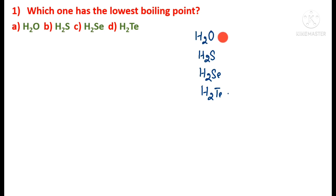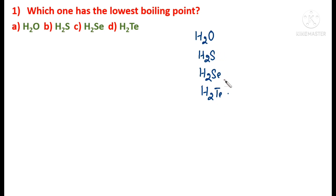Among these four hydrides, water (H₂O) is considered to have the highest boiling point because water molecules are linked by means of strong intermolecular hydrogen bonding, requiring a large amount of energy to break. So water is not the answer. Hydrogen bonding is not present in the rest of the hydrides due to the low electronegativities of their central atoms — sulfur, selenium, and tellurium.